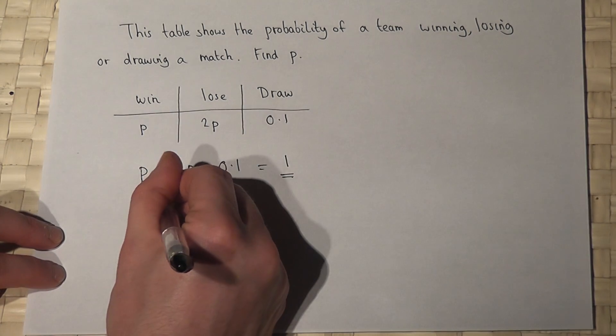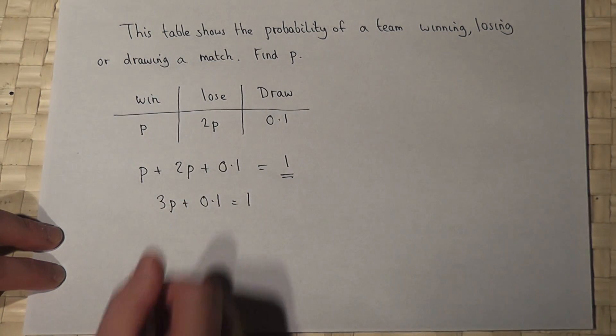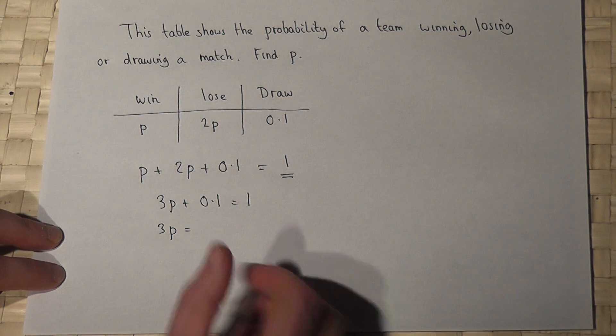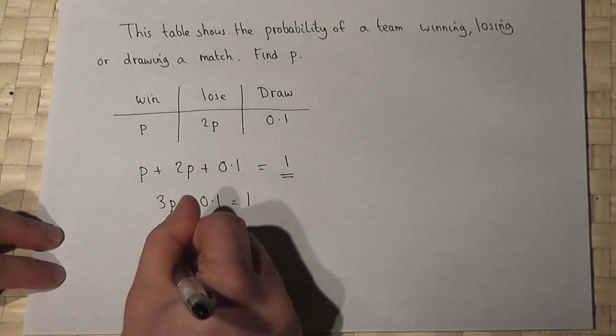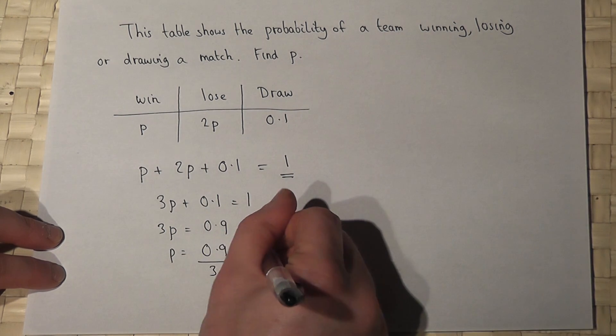So this becomes 3p plus 0.1 equals 1. So 3p equals 1, take away 0.1, which is 0.9. So p just equals 0.9 divided by 3, which is 0.3.